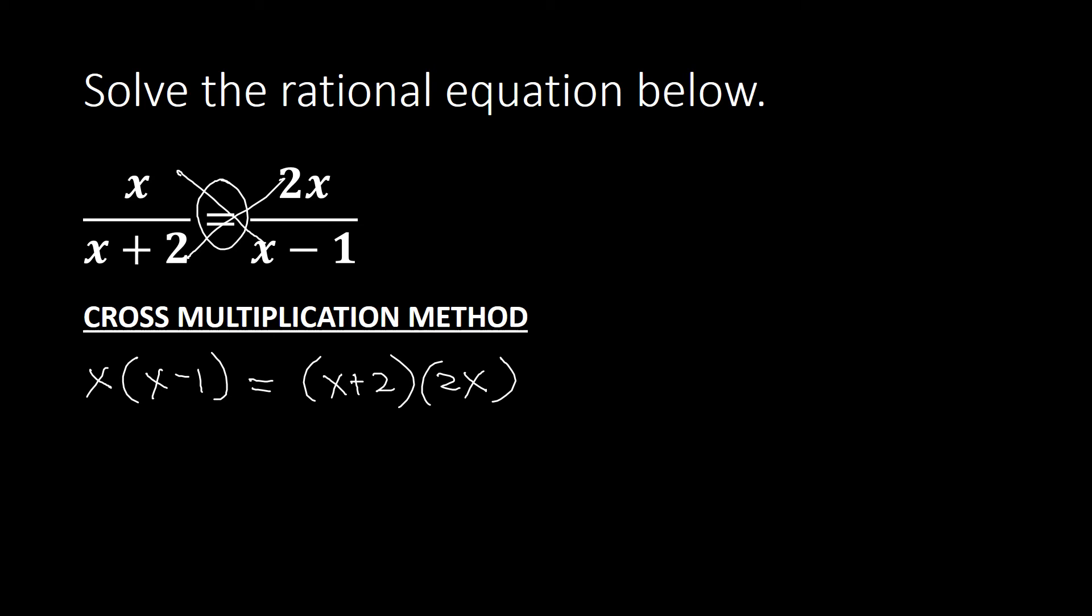We have here distributing x on x minus 1. This is x times x, that's x squared. X times negative 1, that will be negative x. That will be equal to distributing 2x to x plus 2. We have 2x times x, that will be 2x squared. 2x times 2, that will be plus 4x.